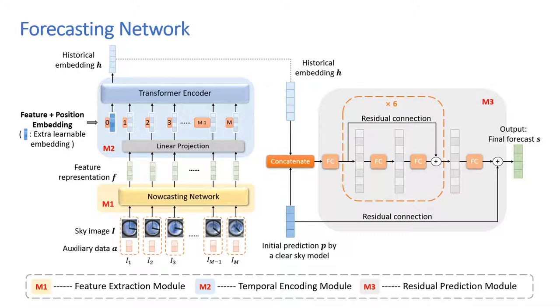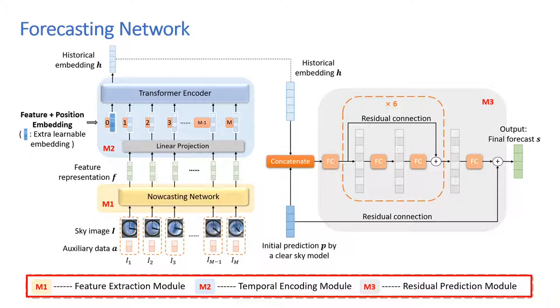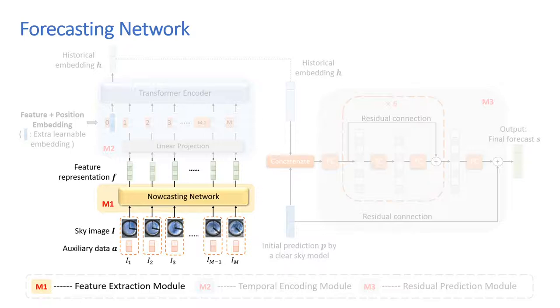Here is the overall framework of our forecasting network. Given a sequence of historical sky images and their corresponding auxiliary data for the past one hour, our forecasting network predicts the solar irradiance up to four hours ahead of time. It consists of three modules: the feature extraction module, temporal encoding module, and the residual prediction module.